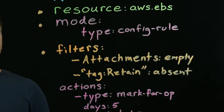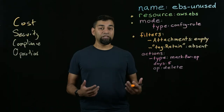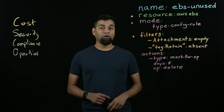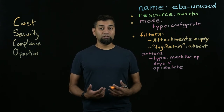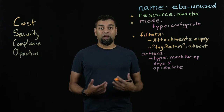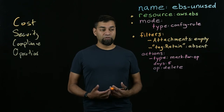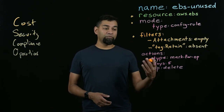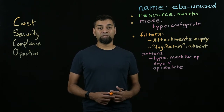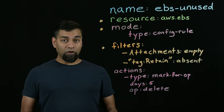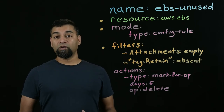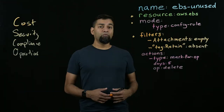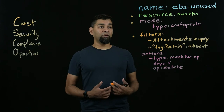Custodian supports several different ways of executing a policy. By default, we use something called the pull execution mode. When you run a policy with pull execution on the CLI, it'll simply query the resources, run them through their filters, and take appropriate actions.